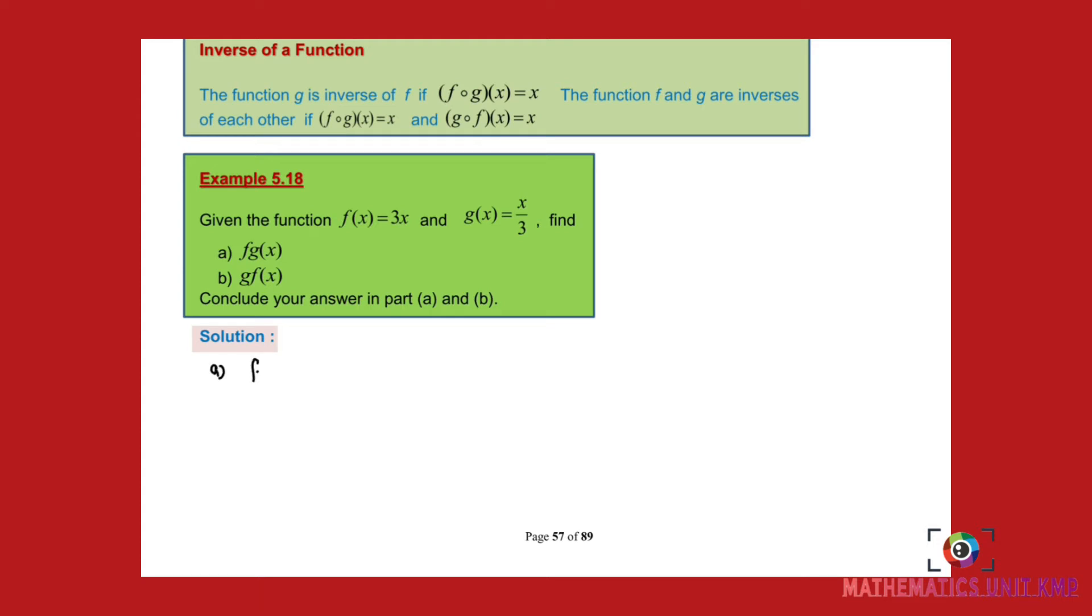Just a basic one. f(g(x)) equals 3 times g(x), which is 3 times x over 3, which equals x. And then for part b, g(f(x)) equals f(x) over 3, which is 3x over 3, same, equals x.